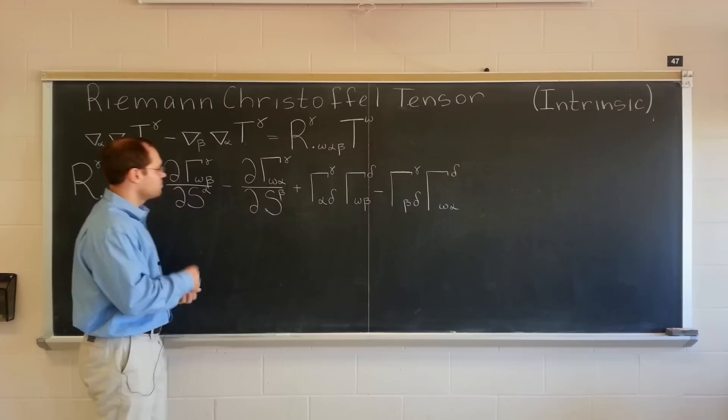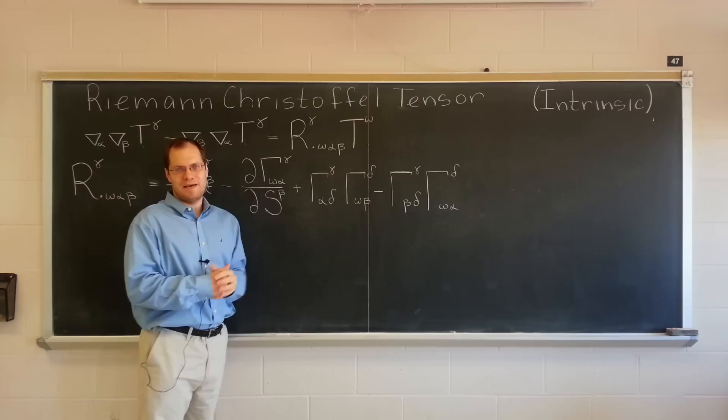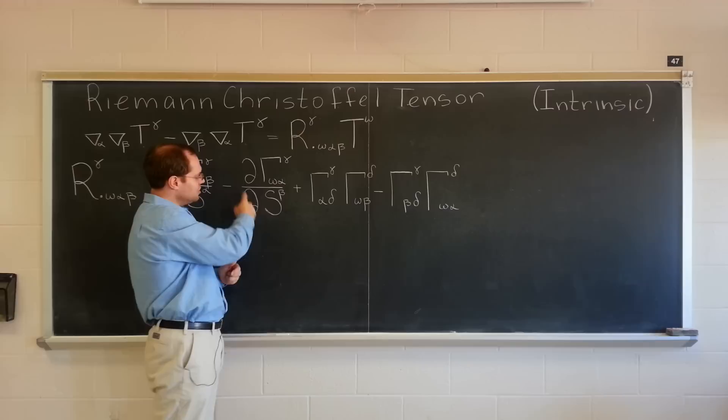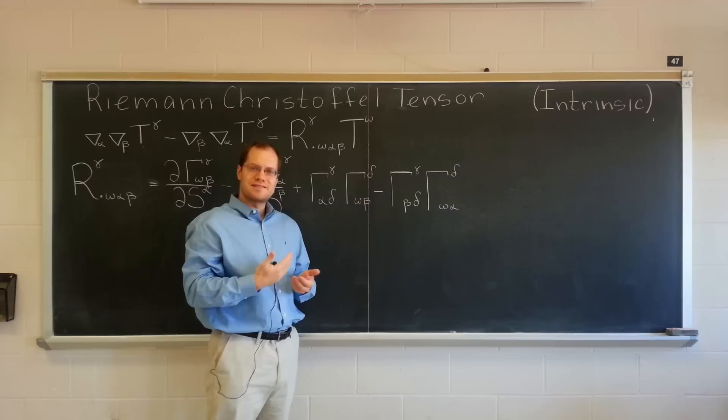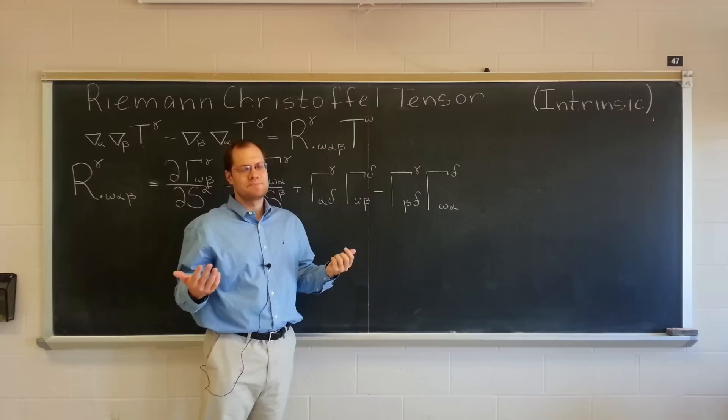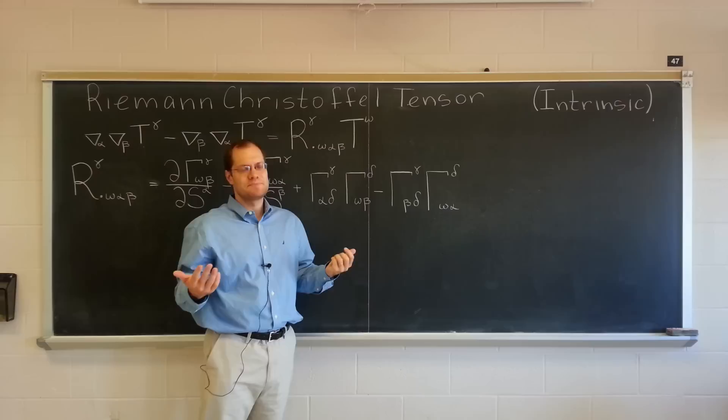Another argument: recall the expression for the Christoffel symbol in terms of the basis elements and plug it in. There will be a basis element dot-multiplying the whole thing, and a partial derivative of a basis element will appear, which you re-express with respect to the same basis using Christoffel symbols. At that point all the terms cancel — arguably a better proof because it doesn't explicitly refer to a Cartesian coordinate system.